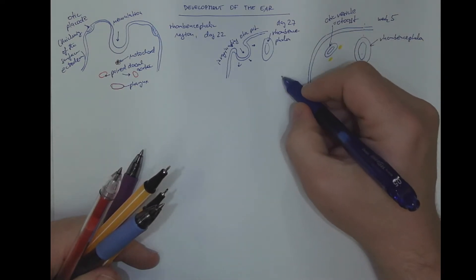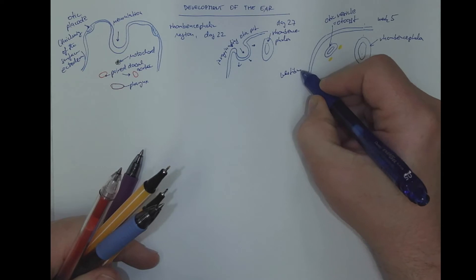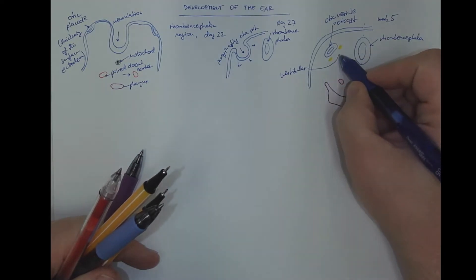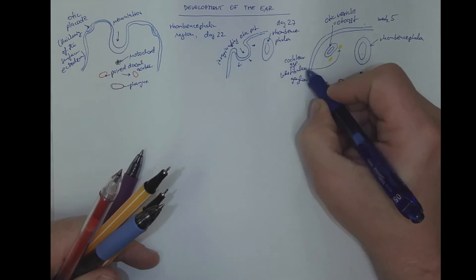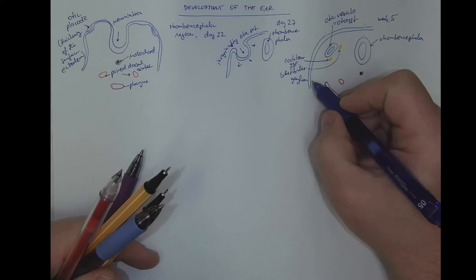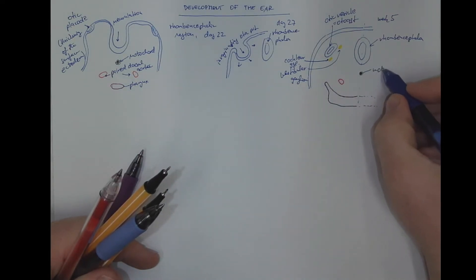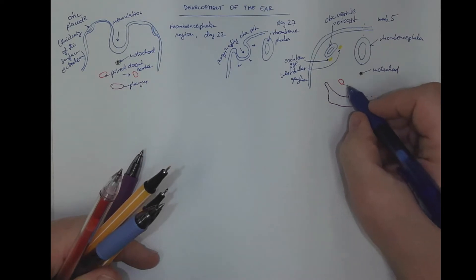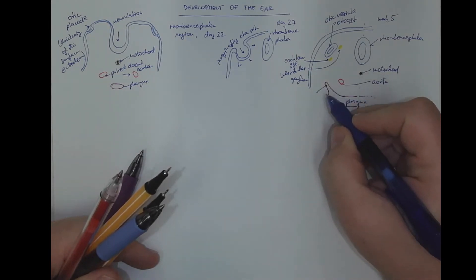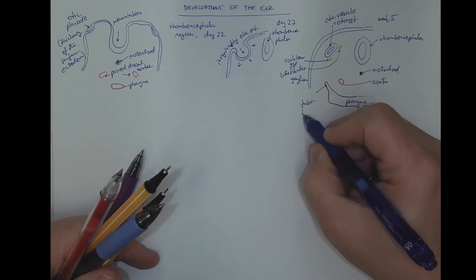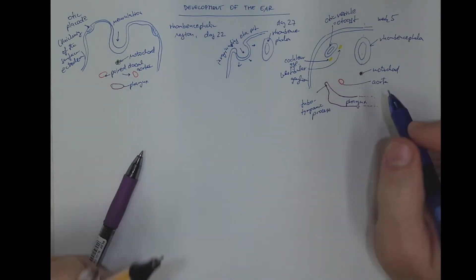The two ganglia, the vestibular for perceiving the balance, and the cochlear ganglion to perceive the hearing sense. The notochord, the aorta which is paired at this level, the pharynx sending an entodermal process called the tubotympanium to this region.